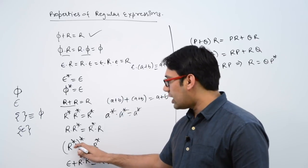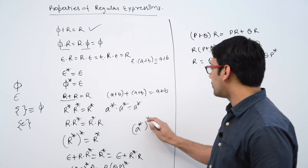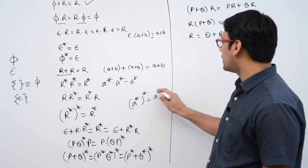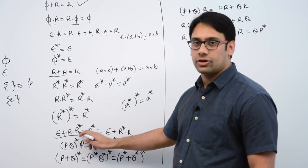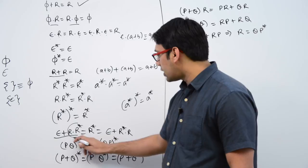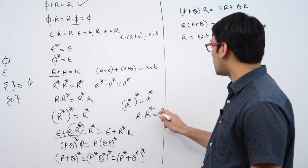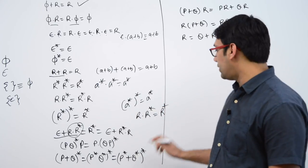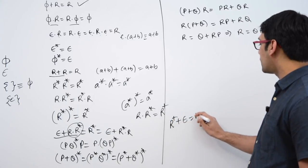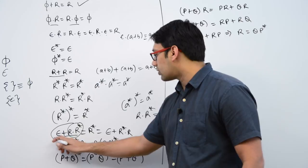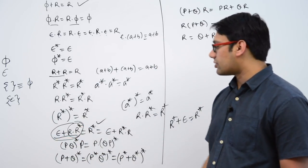If you do r** — that means if you take the Kleene closure of r* again — then it is equal to r* only. Now, if you do epsilon plus r dot r*, this r dot r* is actually representing r+, meaning it does not contain epsilon. But if we add an epsilon symbol — if you do r+ plus epsilon — then it becomes r*. So epsilon plus r dot r* is equivalent to r* only.